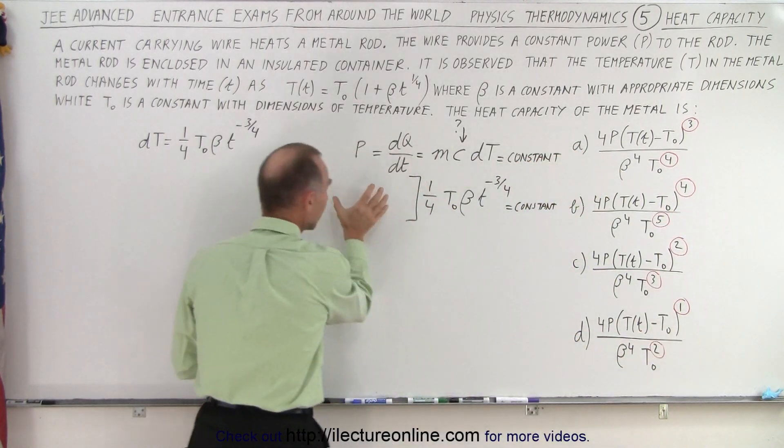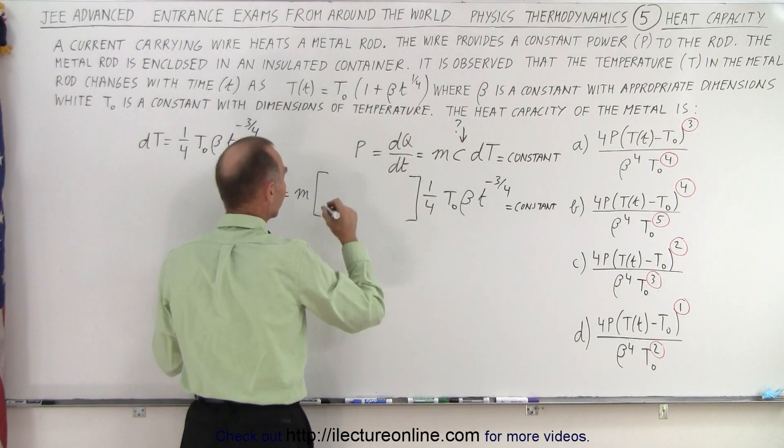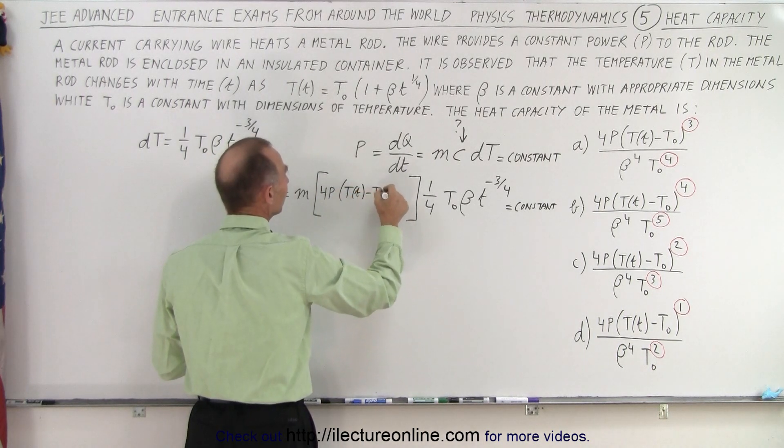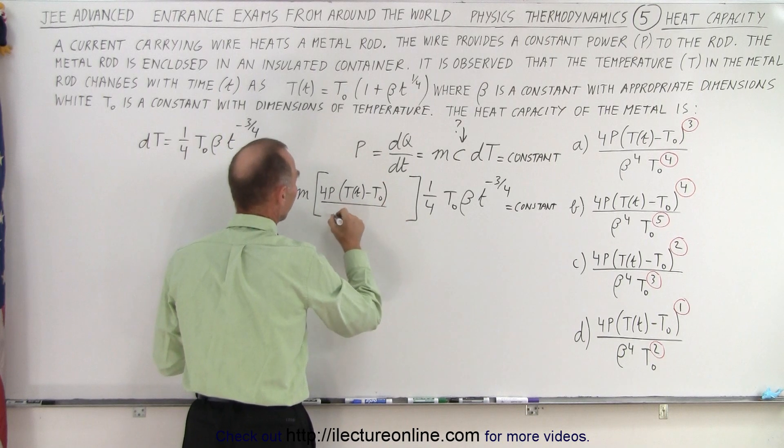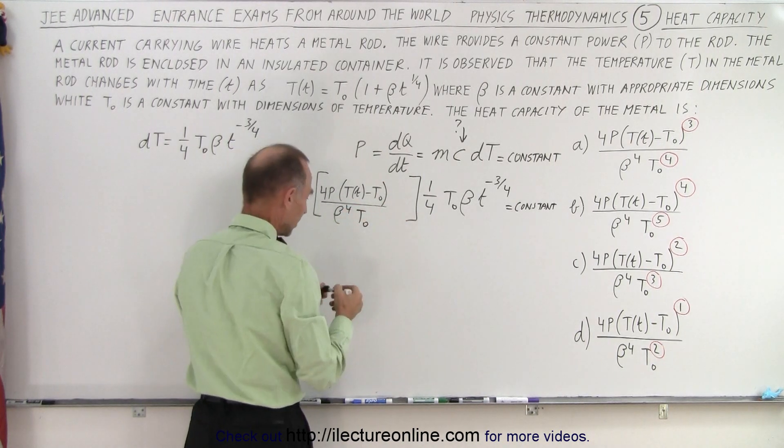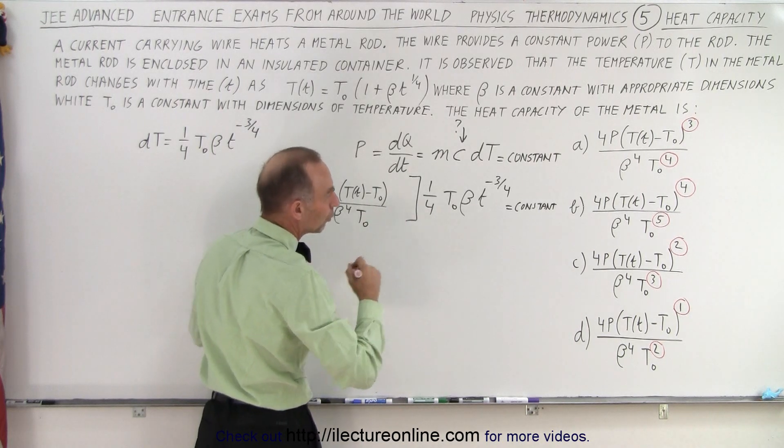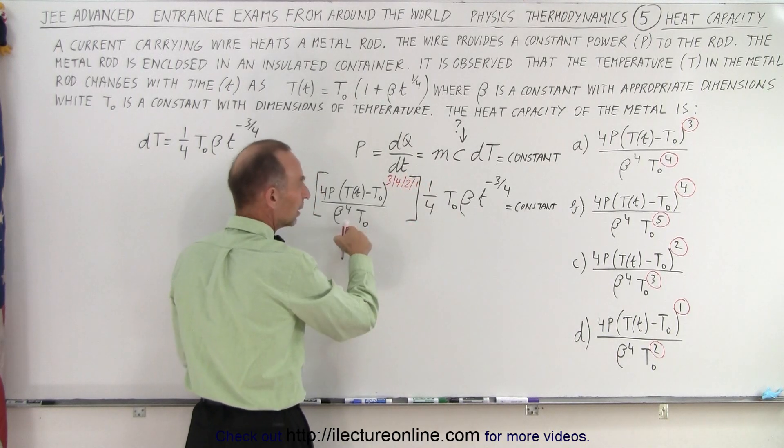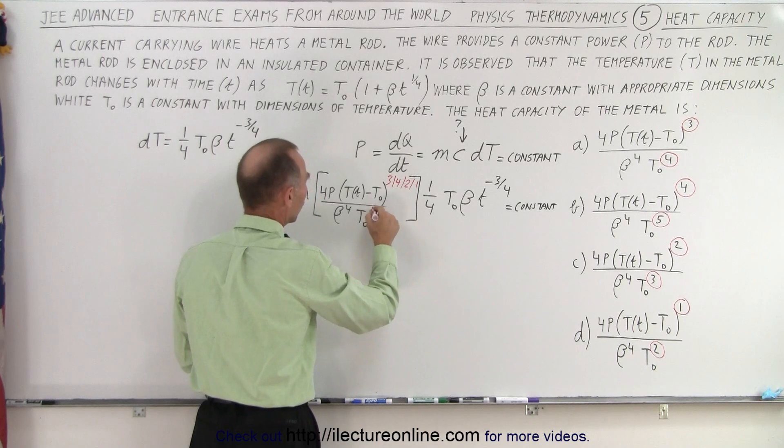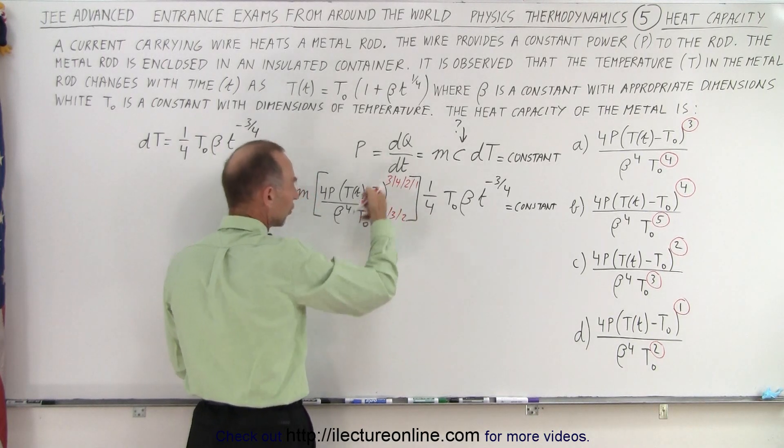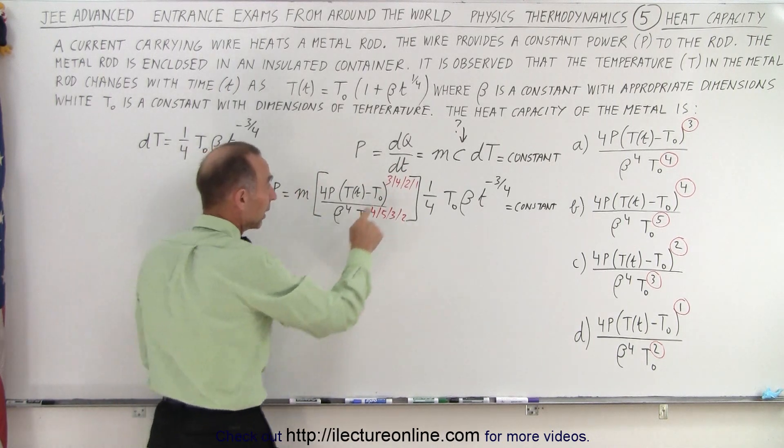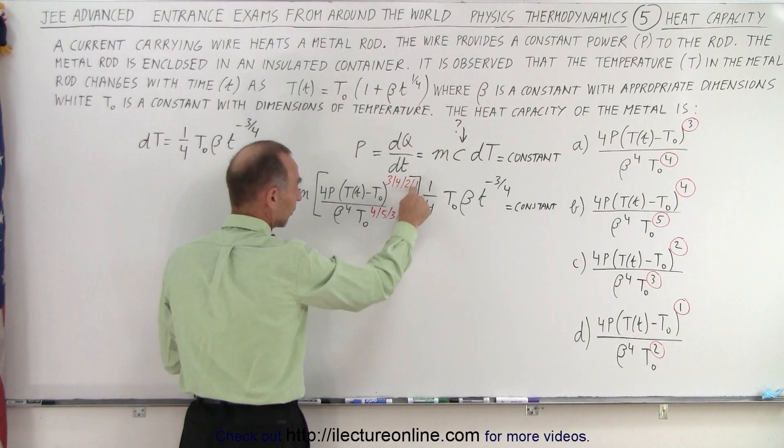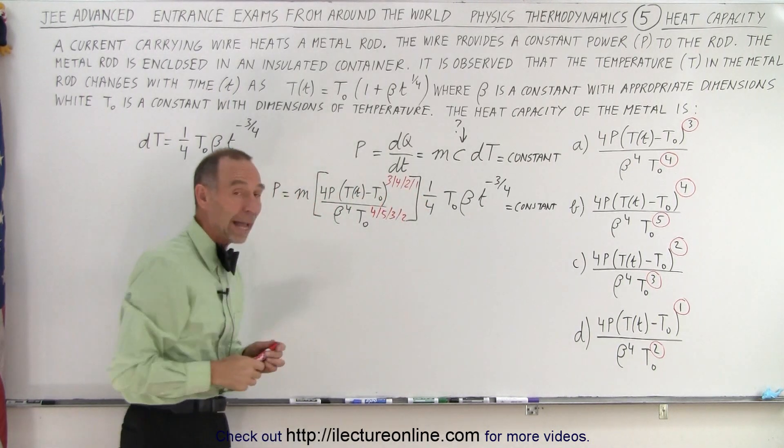So that means I'm going to plug in here what I see. So I have 4P times T as a function of t minus T sub naught divided by beta to the fourth power T sub naught, and notice that the exponents can be 3, 4, 2, or 1 in the numerator, and in the denominator the exponents can be 4, 5, 3, and 2. And notice that I put them in that specific order because when the numerator is 3 here, when the exponent numerator is 3, it's a 4 here. If it's a 4 there, it's a 5. If it's 2, it's a 3. If it's 1, it's a 2. So you can see that they go hand in hand like that.